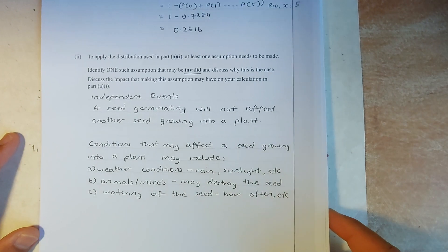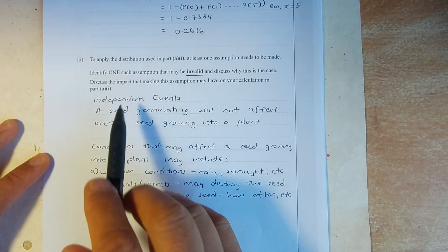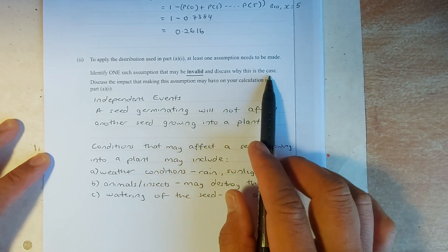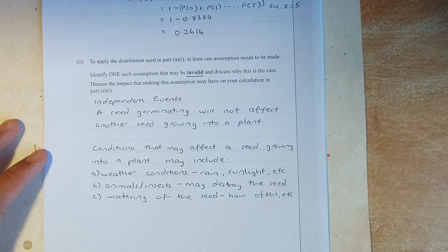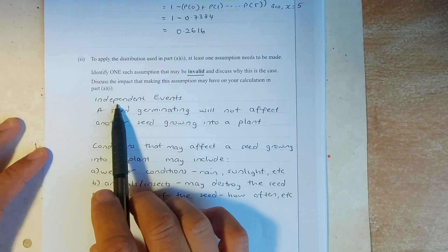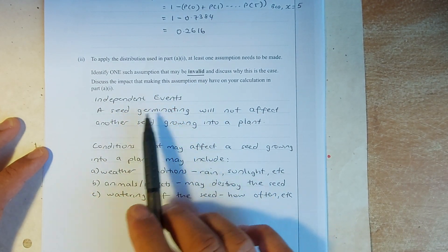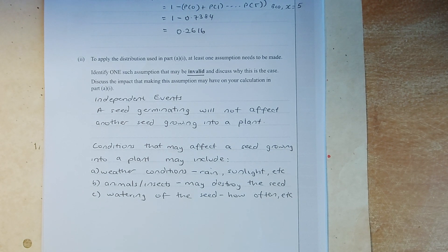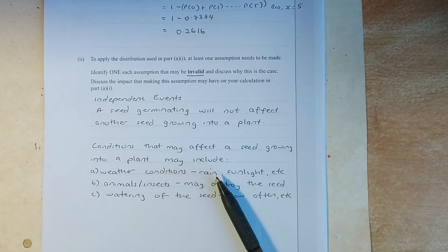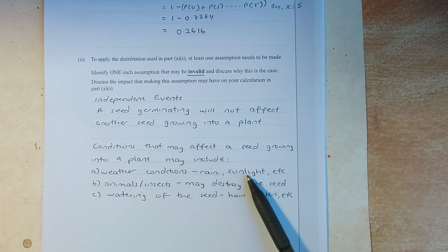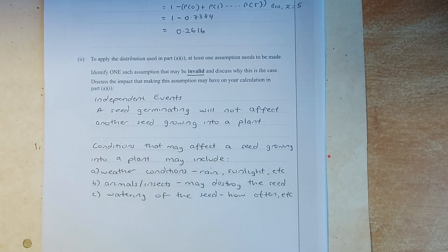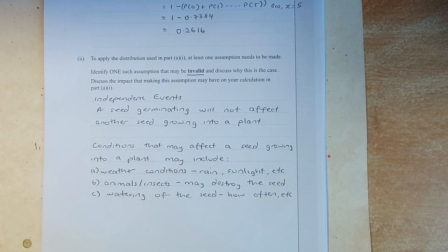The next question is we are going to find one assumption that may be invalid and discuss why this is the case. So, what we've done that we can assume that it is invalid, it's an independent event. A seed germinating will not affect another seed growing into the plant. So, the condition that may affect the seed growing include the following. The weather condition, it could be rain, enough rain or no rain, enough sunlight or no sunlight. Whether the animals or insects may destroy the seed while they are on the verge of growing.